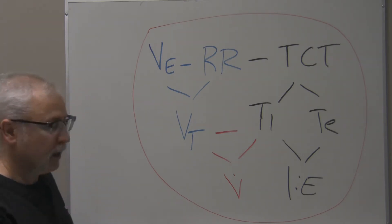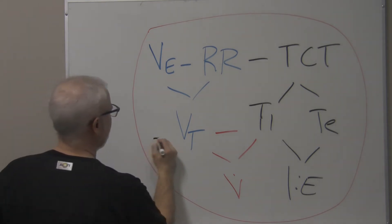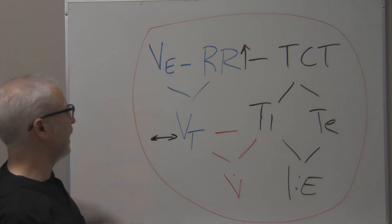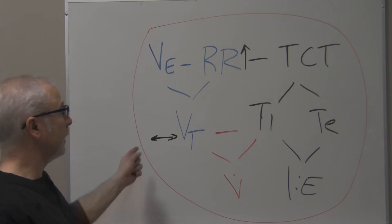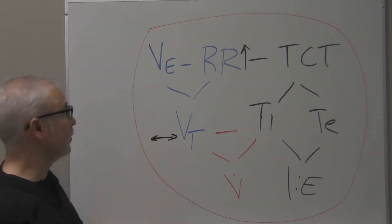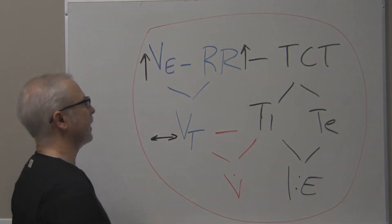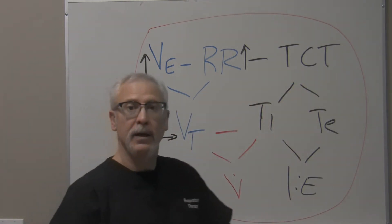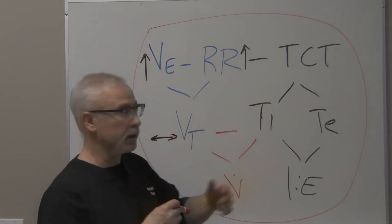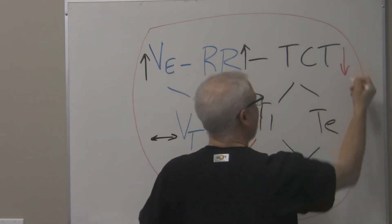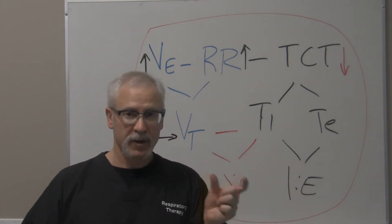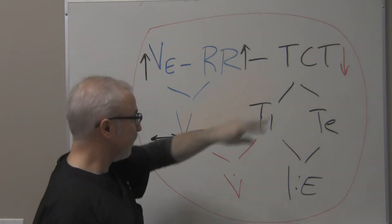If you have a tidal volume that remains the same while the respiratory rate increases, what has to happen to the minute ventilation? Well, if the respiratory rate goes up and the tidal volume remains constant, you're going to have an increase in ventilation delivery. Now if the respiratory rate goes up, what has to happen to the total cycle time? Total cycle time has to go down. They have that inverse relationship. So if there's more breaths in one minute, then the total cycle time for each breath is going to be reduced.